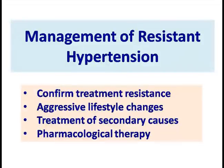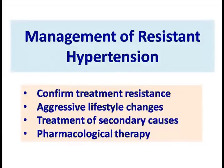How do you manage that? There are three or four important components of therapy of resistant hypertension: we need to confirm treatment resistance by various clinical parameters, we need to focus on aggressive lifestyle changes, we need to rule out and treat secondary causes, and of course there is pharmacological therapy.